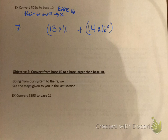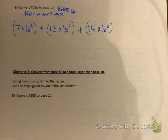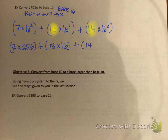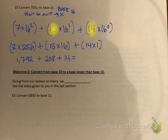To reiterate: D=13 and E=14. So we have 14×16⁰, 13×16¹, and 7×16². That gives us 7×256 = 1792, plus 13×16 = 208, plus 14×1 = 14. Adding those up: 1792 + 208 + 14 = 2014.